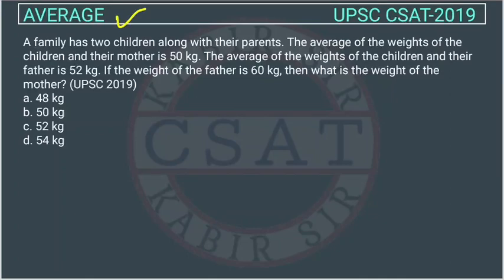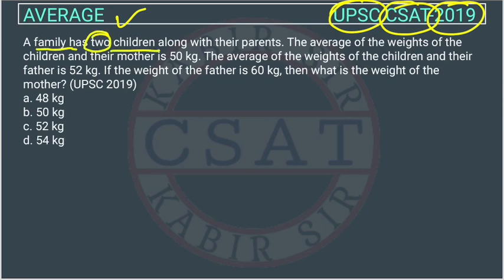This is a question on averages asked by UPSC in the CSAT paper 2019. UPSC normally asks a minimum of two questions from averages, so from the UPSC point of view, averages is very important and it is also very easy to score. A family has two children along with their parents.